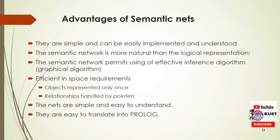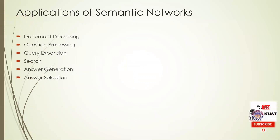Some of the advantages of semantic networks are: they are simple and can be easily implemented and understood; the semantic network is more natural than logical representation; it permits the use of effective graphical algorithms; they are efficient in space requirements as objects are represented once and relationships are handled by pointers; and they are easy to translate into Prolog and nowadays Python. Applications of semantic networks include document processing, question processing, query expansion, searching, answer generation, and answer selection.